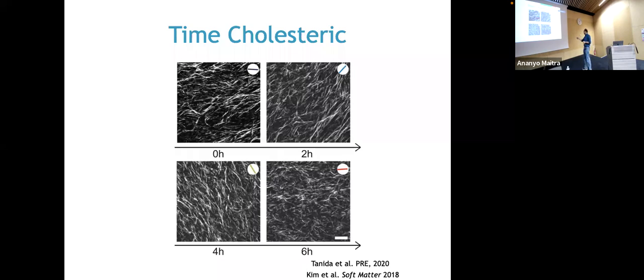This means time cholesteric phases should be observed in experiments on active systems, and indeed they are. This is an example of a time cholesteric state observed in experiments on motor-microtubule gels, just after we predicted it would exist. The microtubule organization rotates with a period of six hours, exactly as predicted. In experiments where motor-microtubule gels do not rotate, they are unstable and cannot remain aligned; but here they remain aligned precisely because they are rotating.